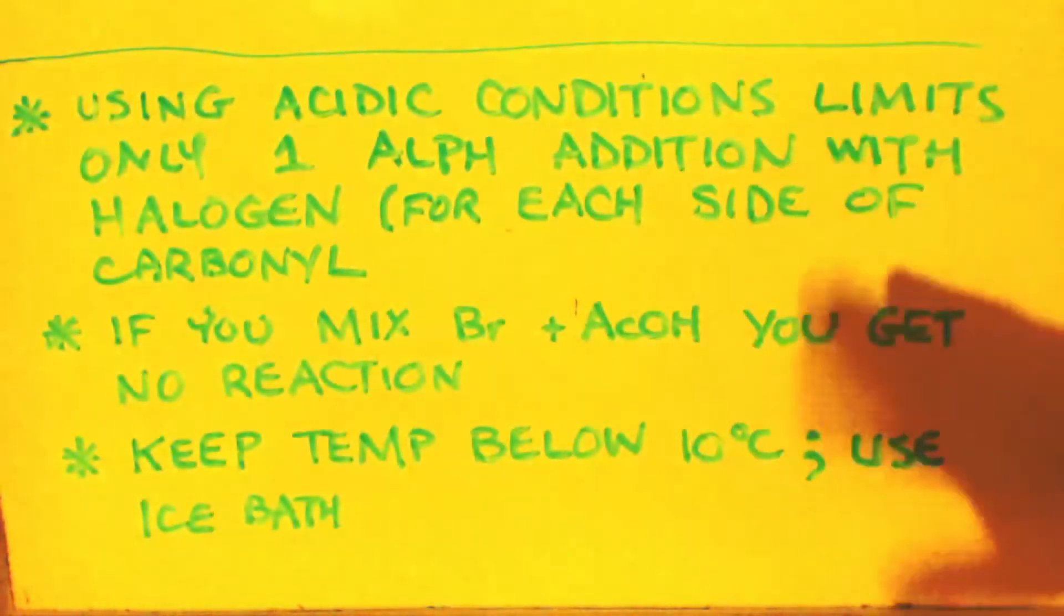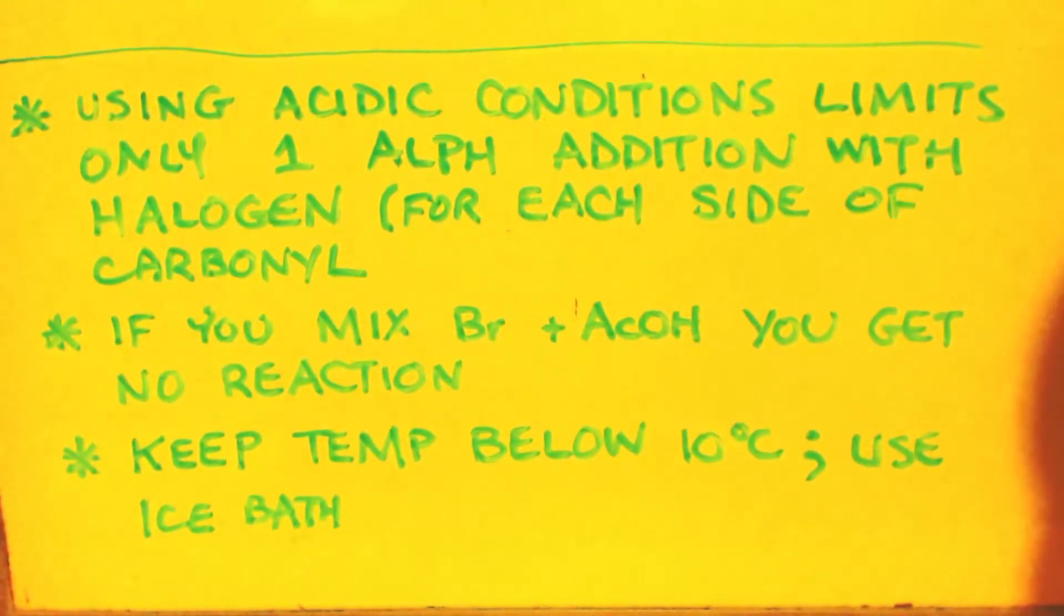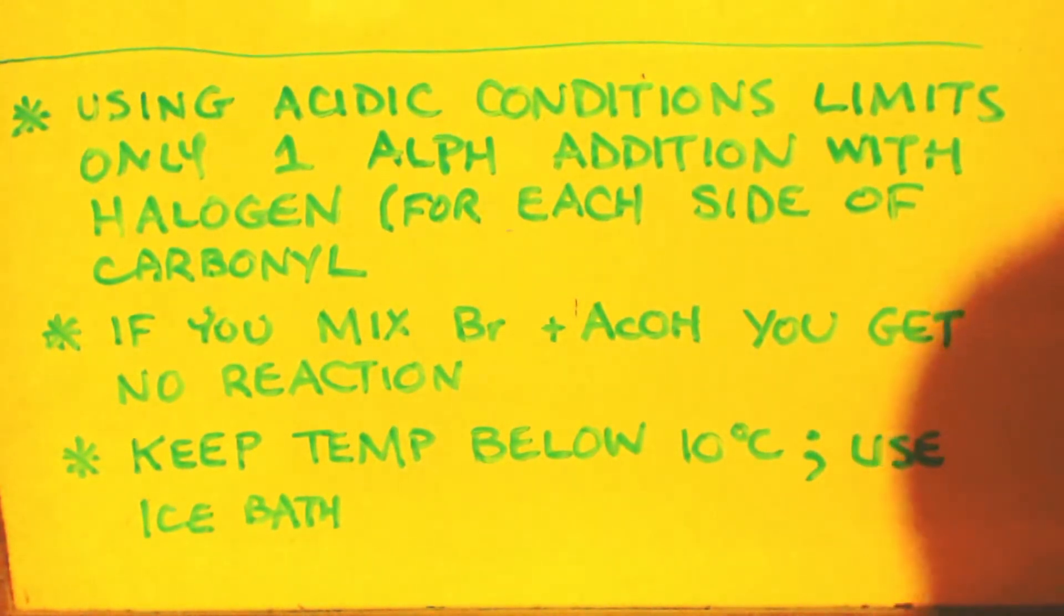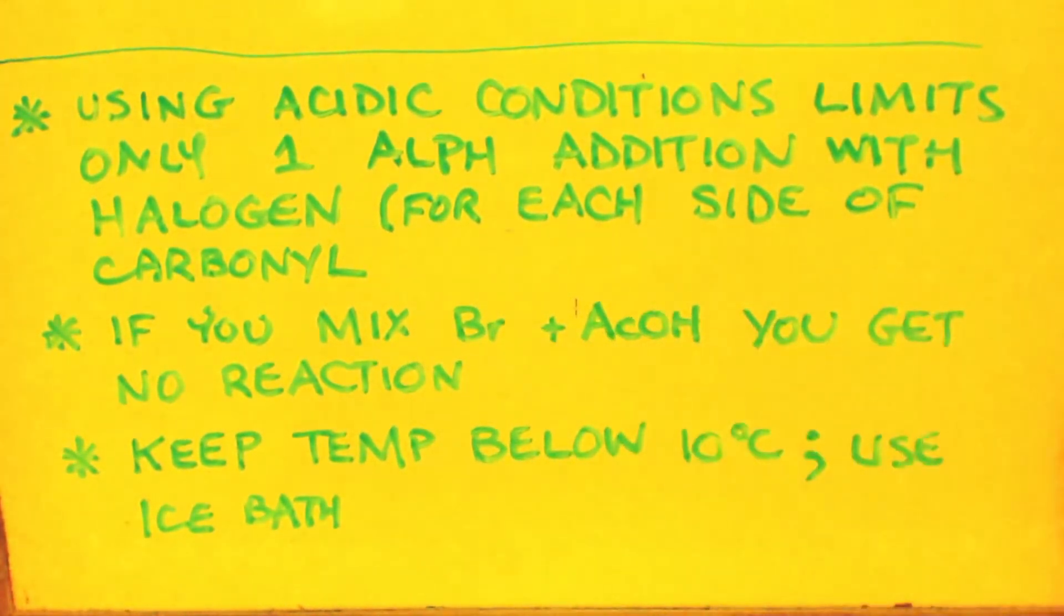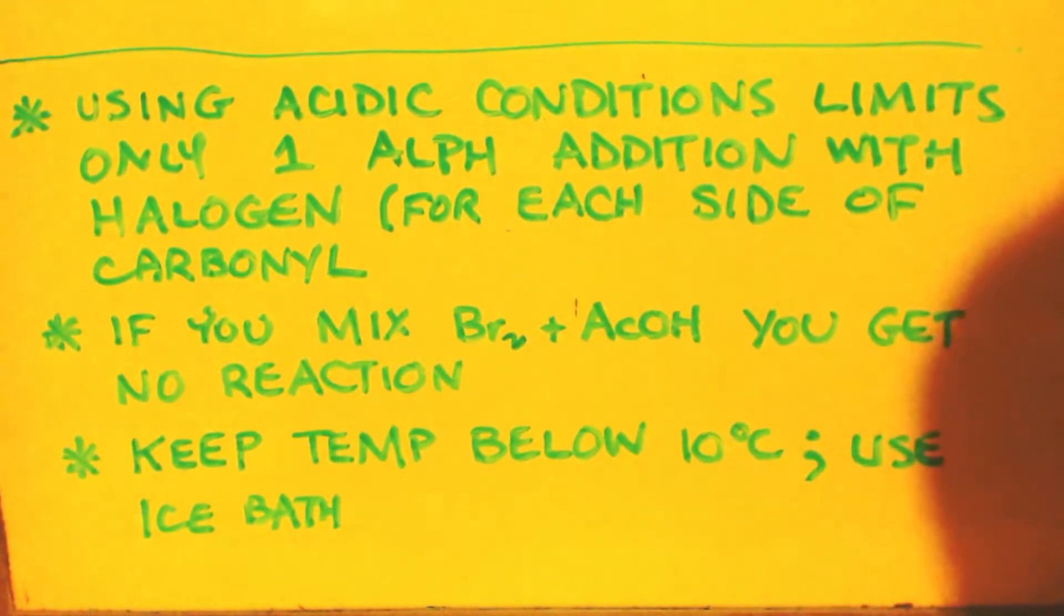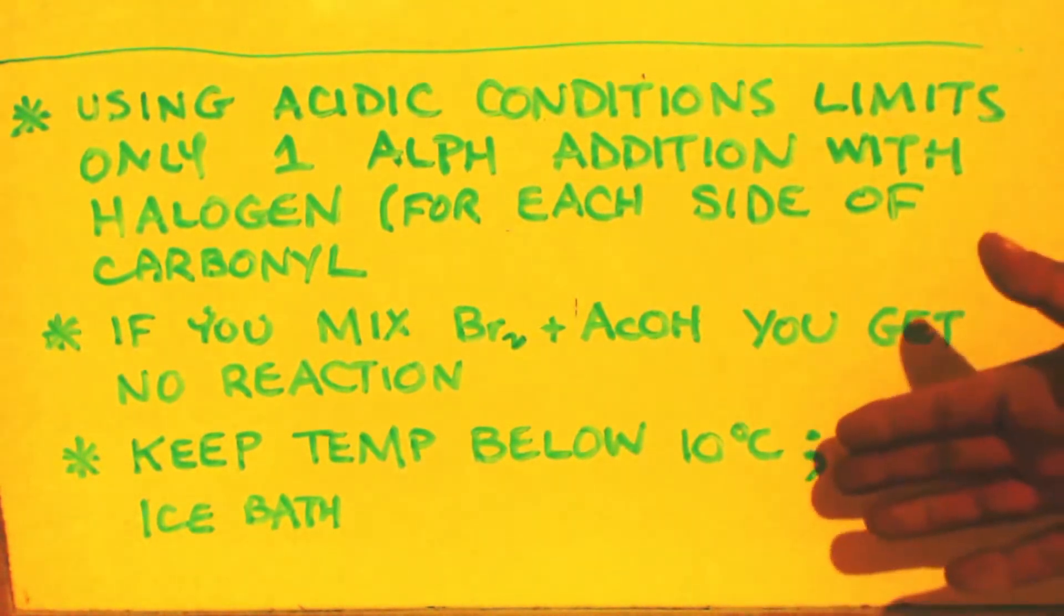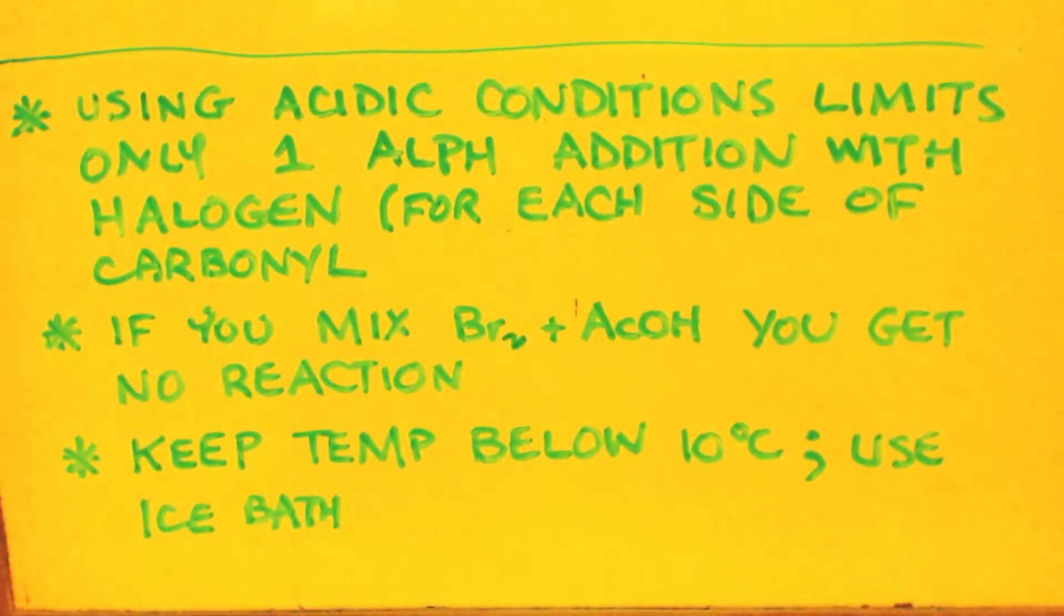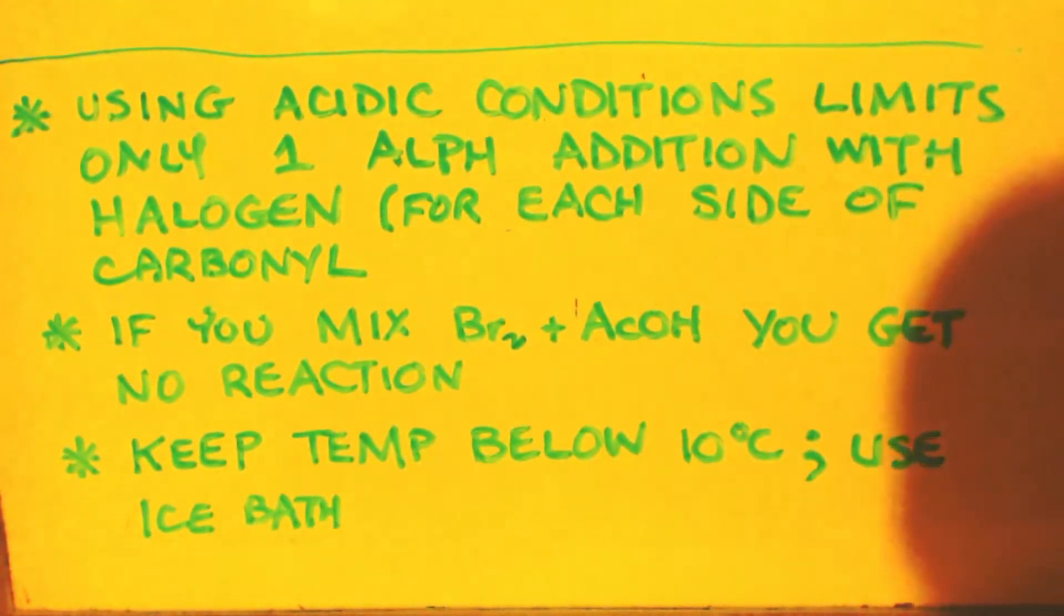So it needs acidic conditions. It limits only one alpha addition with each halogen for each side. If you put in double the amount of halogen you need, you're going to get an alpha addition on both sides of the carbonyl, most likely. If you mix bromine and acetic acid, you get no reaction. And the third thing I wanted to bring up is that you want to keep your temp below 10 degrees Celsius. Use an ice bath. Get this stuff, when you first start out, get all your chemicals as freezing cold as you can, like five Celsius. And then try to keep the reaction below 10°C the entire time.